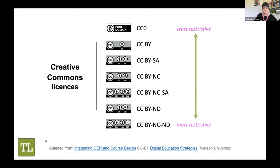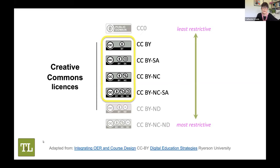This is a list of all the different licenses you may choose from, least restrictive to most restrictive. CC0 alludes to public domain — you don't even have to provide attribution. CC BY means just give the creator's name. Then you can add different conditions. For educational purposes, we're generally only talking about these four licenses: CC BY, CC BY Share Alike, CC BY Non-Commercial, and CC BY NCSA.